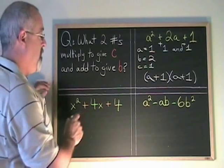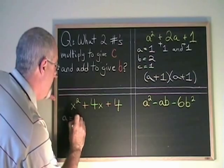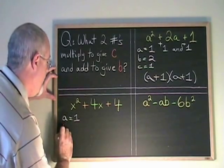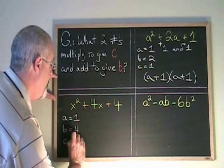Let's do another one. Here, the numerical coefficient of the first term is 1. The second term is 4, and the third term is also 4.